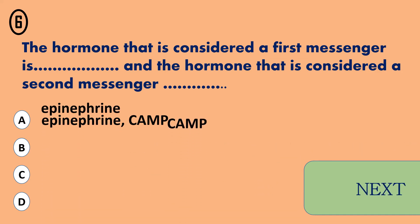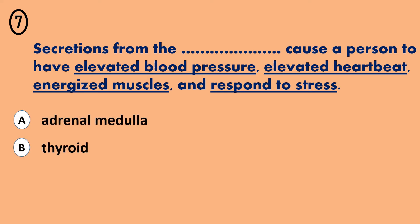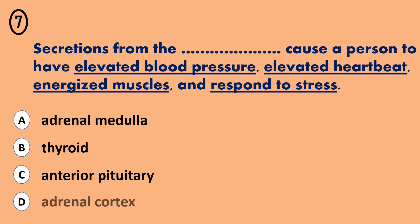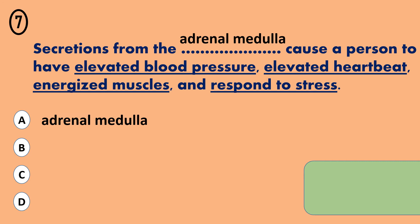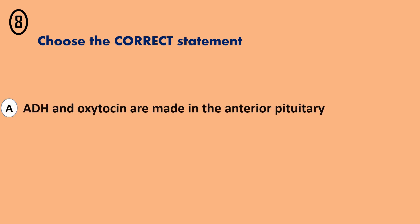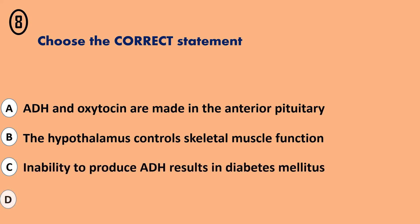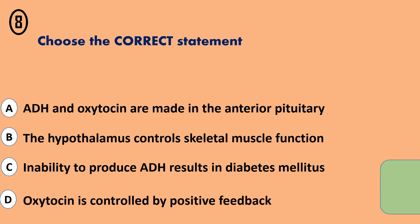The correct answer is... Question 7. A - Adrenal medulla. B - ADH and oxytocin are made in the anterior pituitary. C - The hypothalamus controls skeletal muscle function. D - Inability to produce ADH results in diabetes mellitus. E - Oxytocin is controlled by positive feedback.